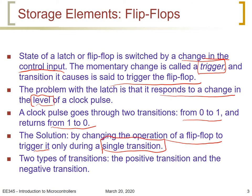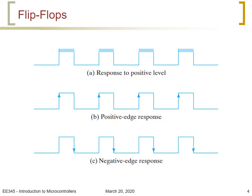There are two transitions of the clock pulse: the positive transition when the clock goes from 0 to 1, and the negative transition when the clock goes from 1 to 0. If the latch responds to the level of the clock pulse, it responds throughout the entire high or low period, whereas edge-triggered operation responds only during a very short time at the positive or negative edge.